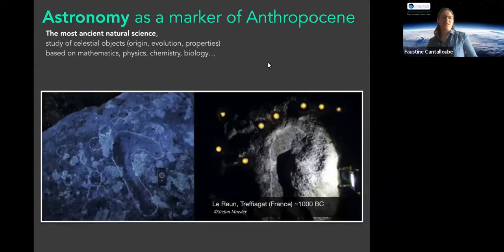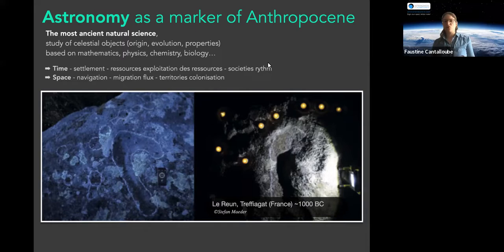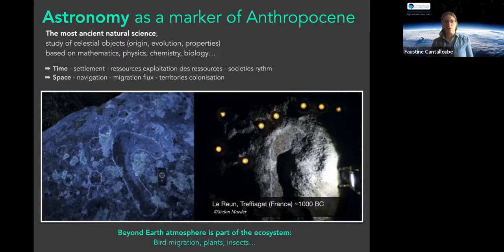Astronomy is a very specific science, and it was very important for human settlement because it's mainly about studying time — seasons and variations — which helped settling societies, reading rhythms, and exploiting resources. It also provided space monitoring for navigation, migration flux, and colonization of territory — meaning simply going from one place to another and having crops and things.